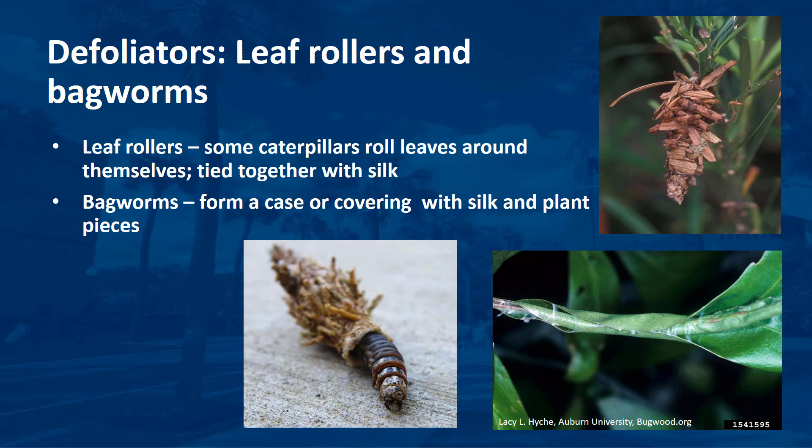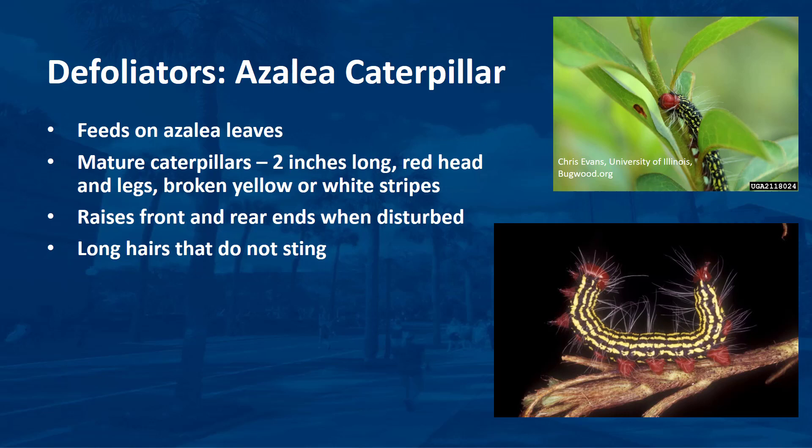Some caterpillars are concealed by rolling leaves around themselves. These leaf rollers tie leaves together with strands of silk. Other caterpillars, such as the bagworm, form a case or covering around themselves for protection. Bagworms construct their cases from silk and plant pieces, including leaves, needles, or twigs. The bags hang from plants, from which the caterpillars extend their heads out to feed. The bags are often mistaken for cones on pines or evergreens.